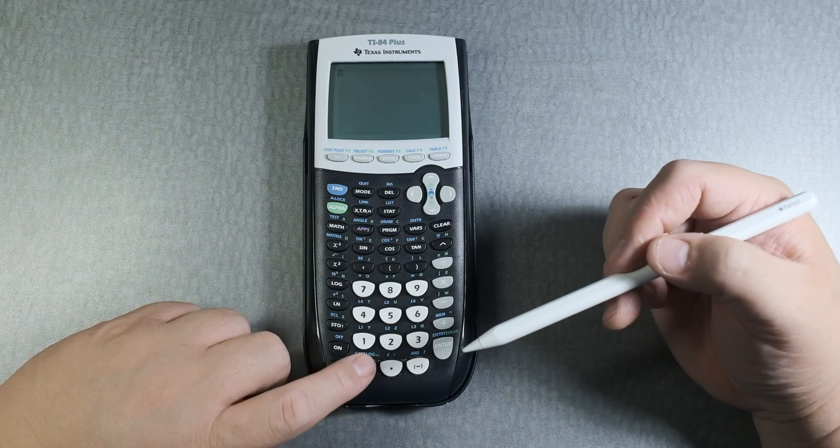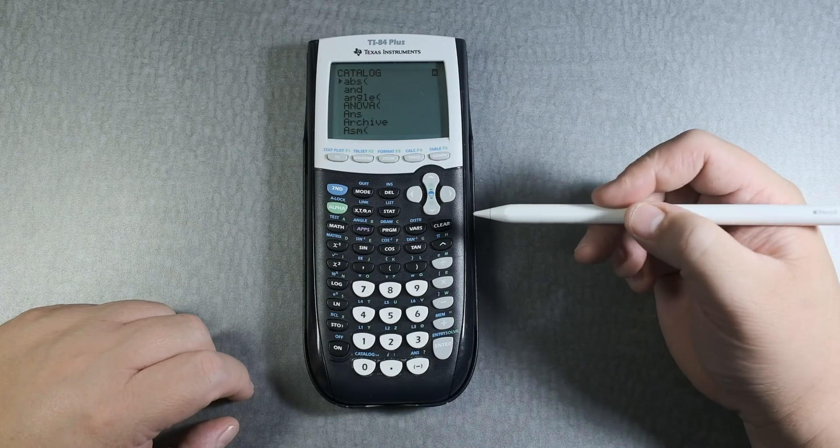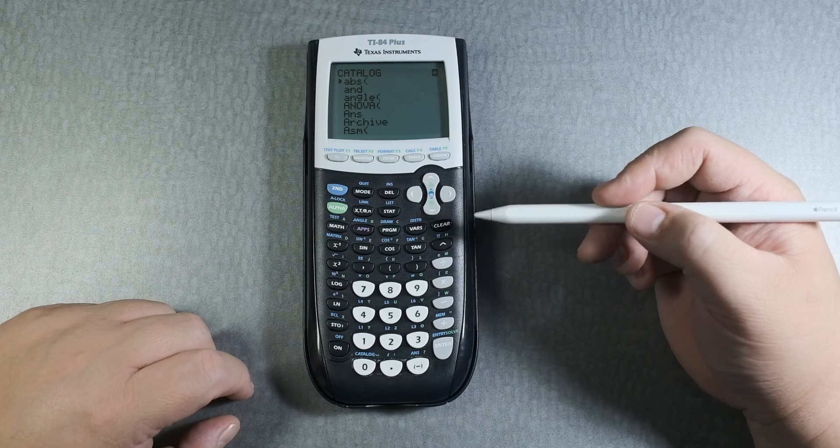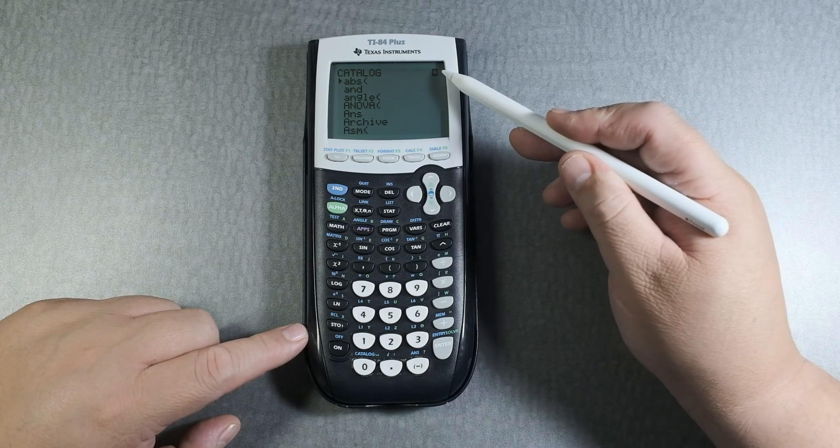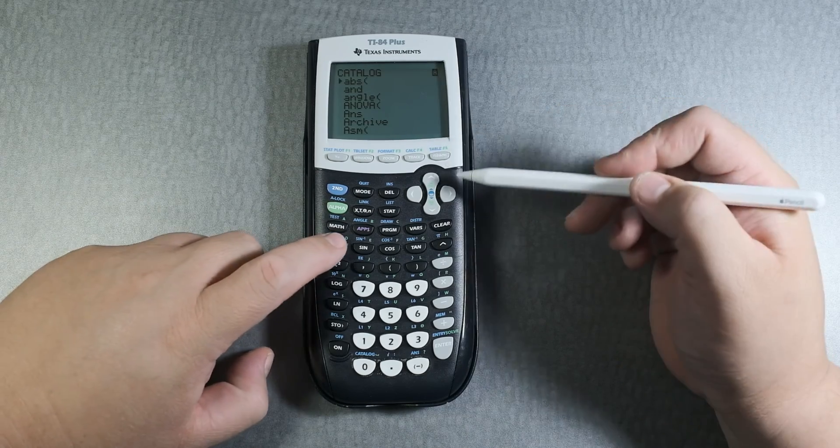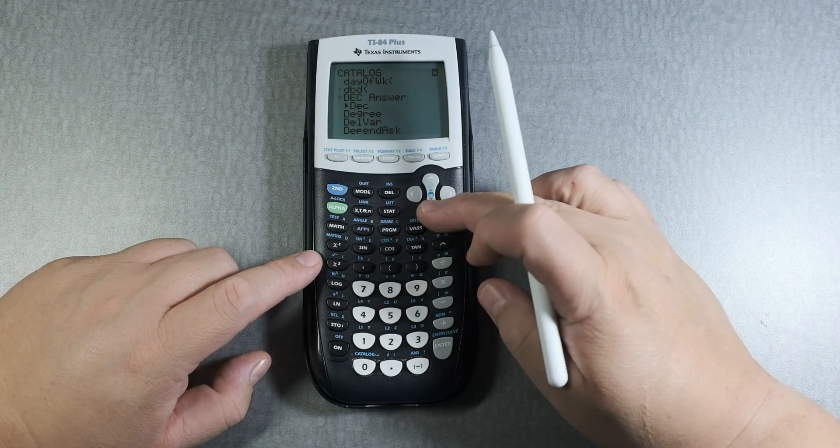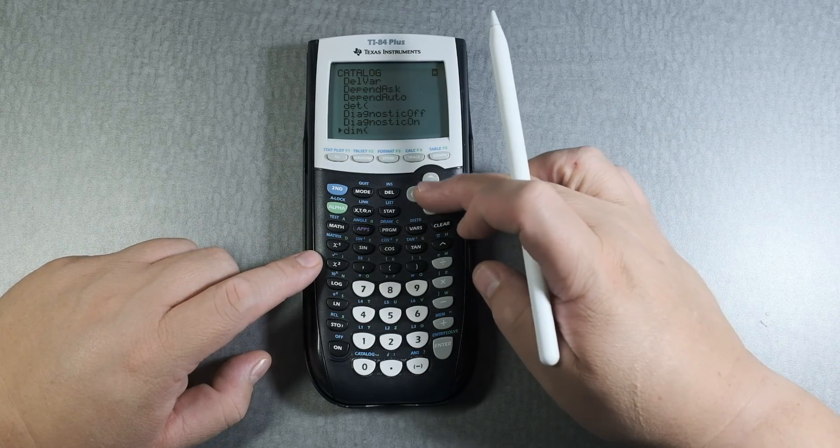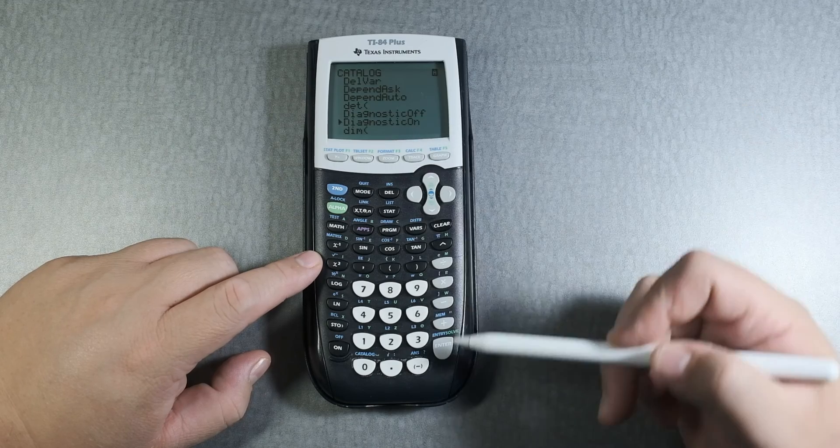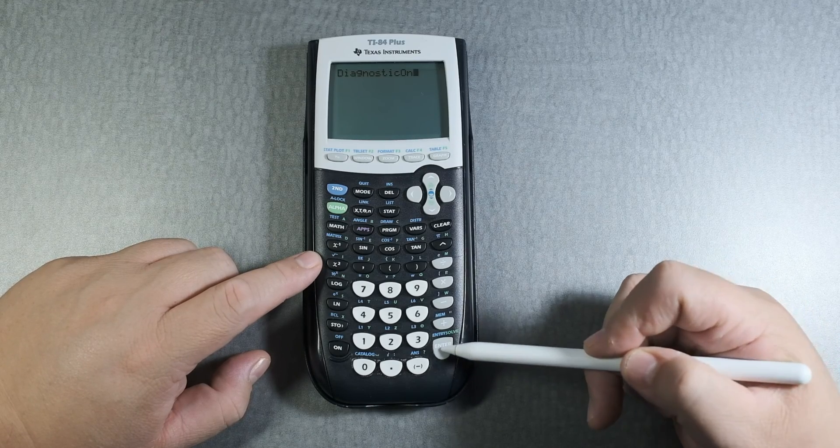So second, catalog, and then diagnostic. We're going to click on D. This is turned on, so we're going to click on D and we'll see if we can find diagnostic. There, diagnostic. We got to turn it on. Okay.